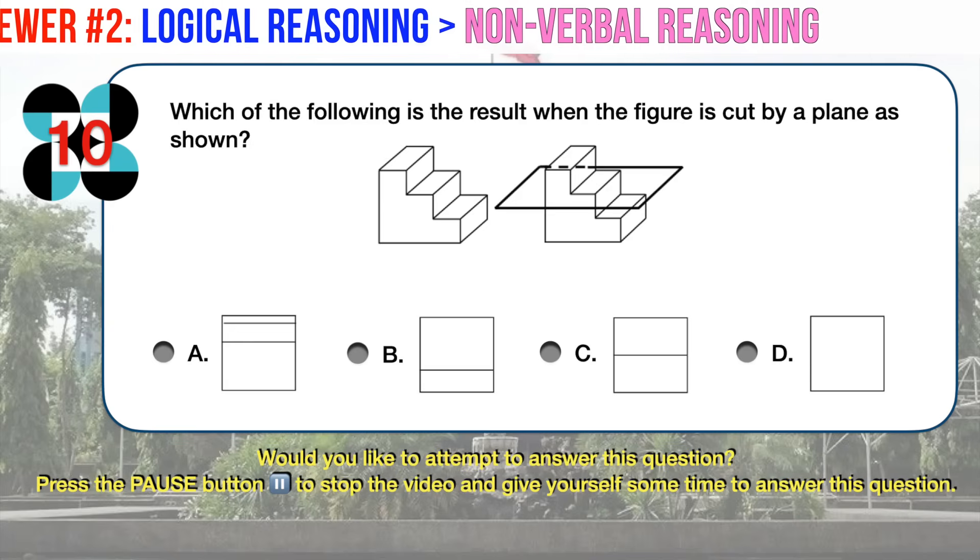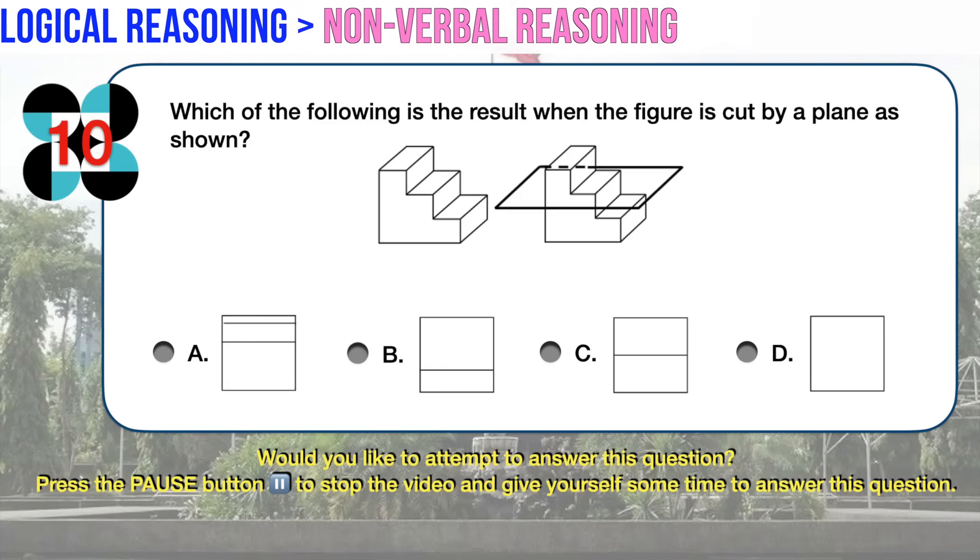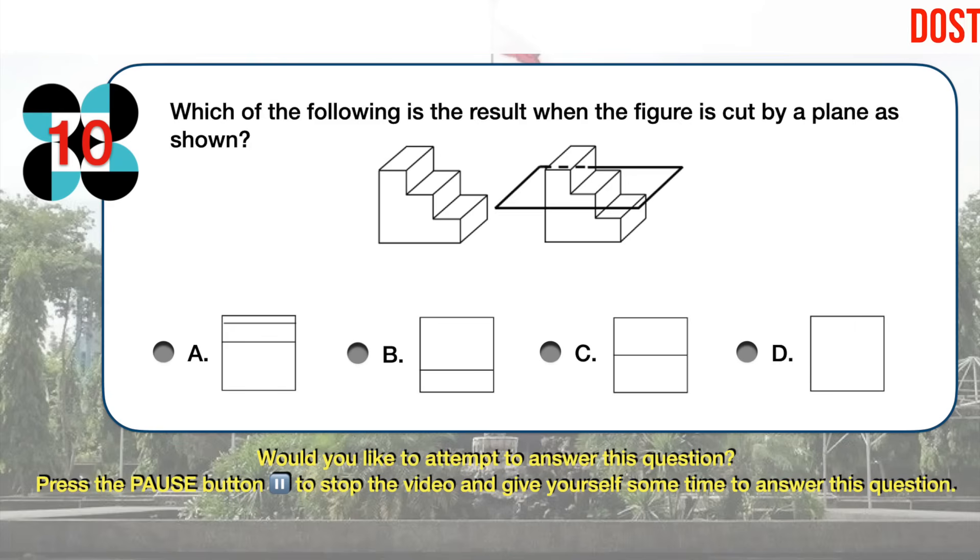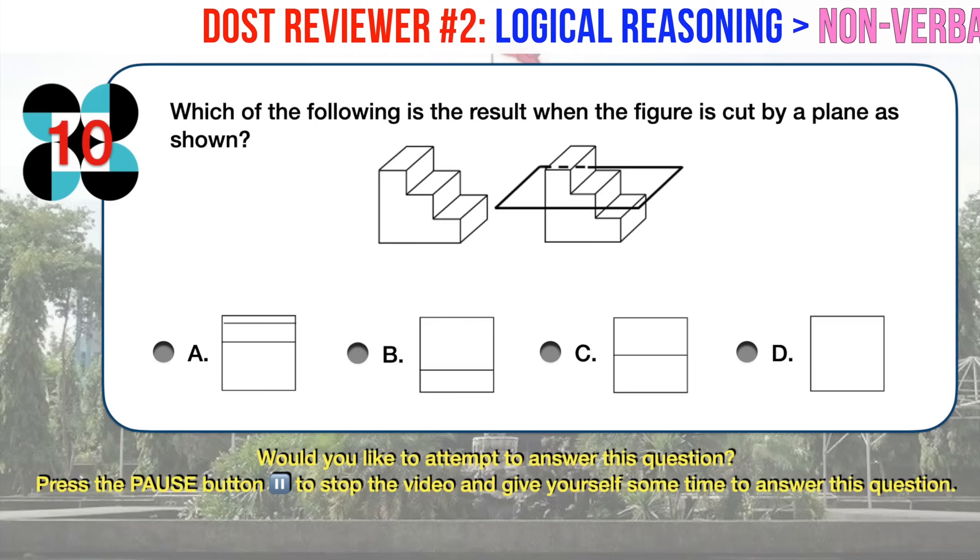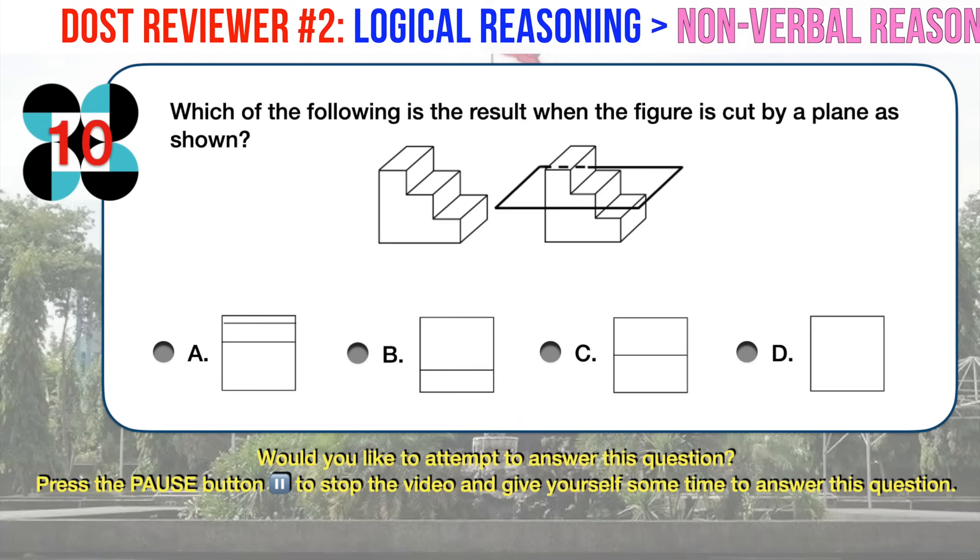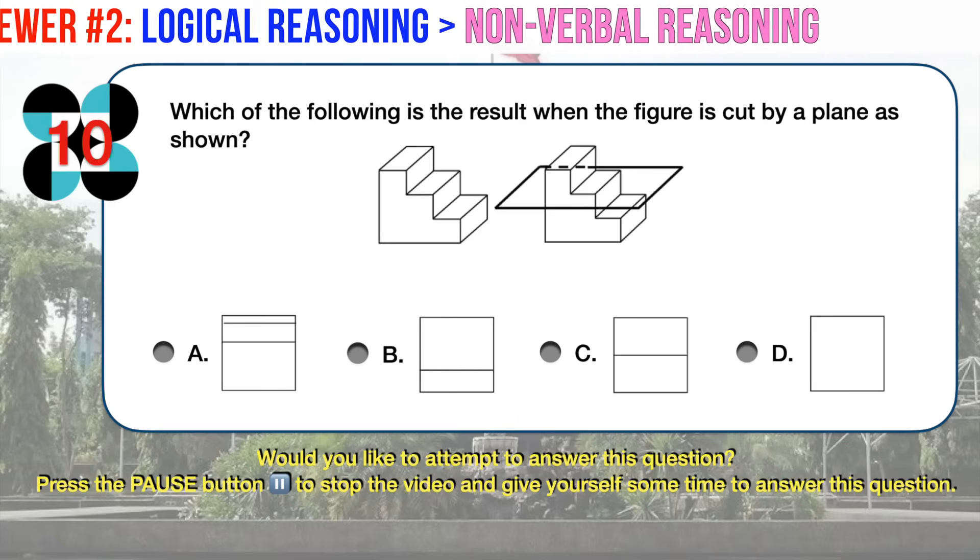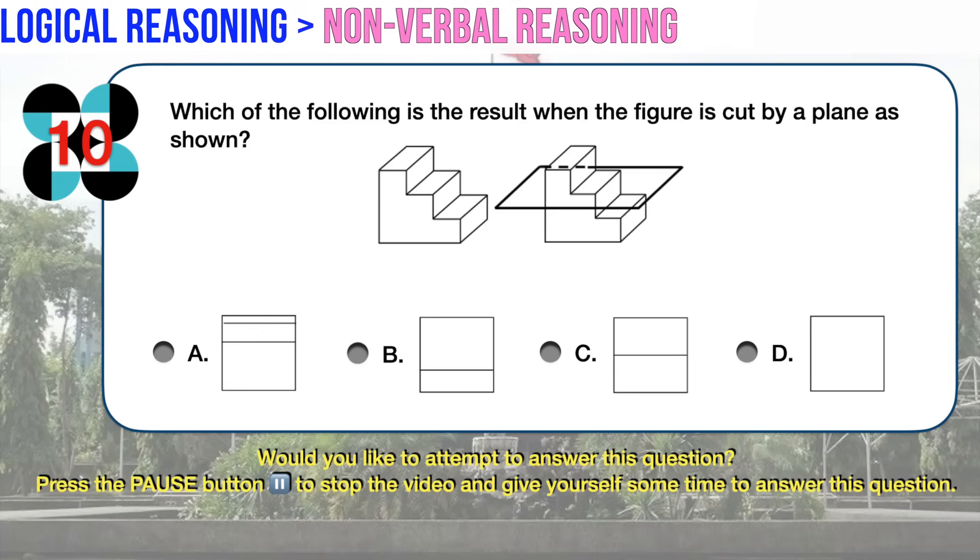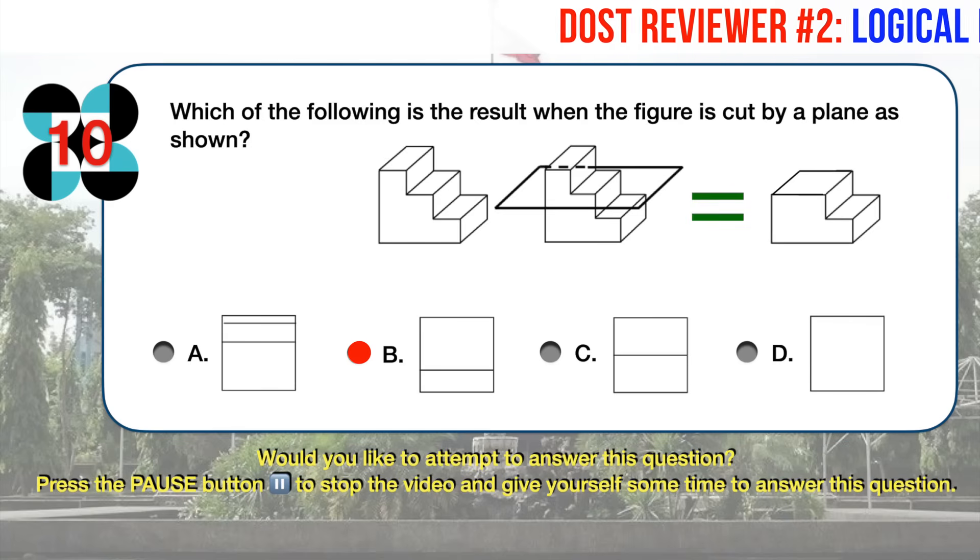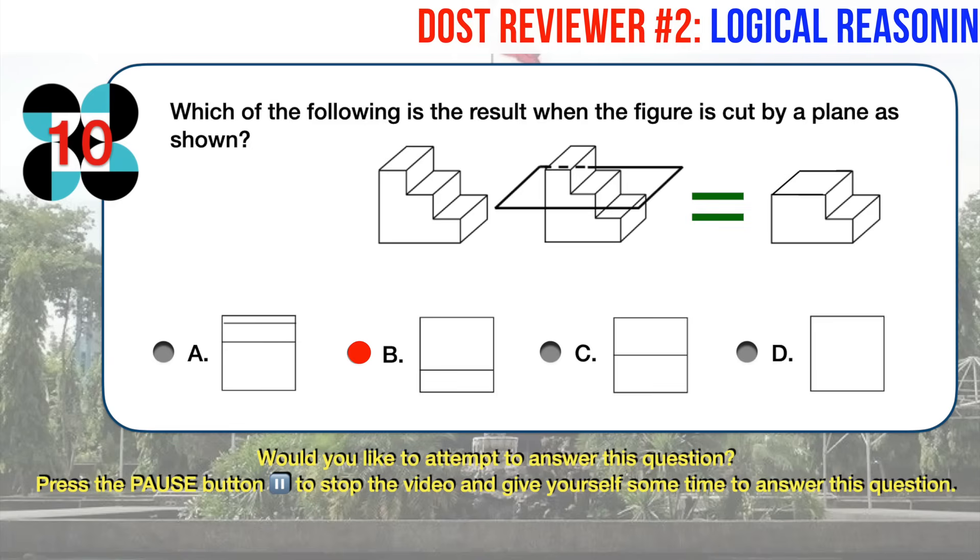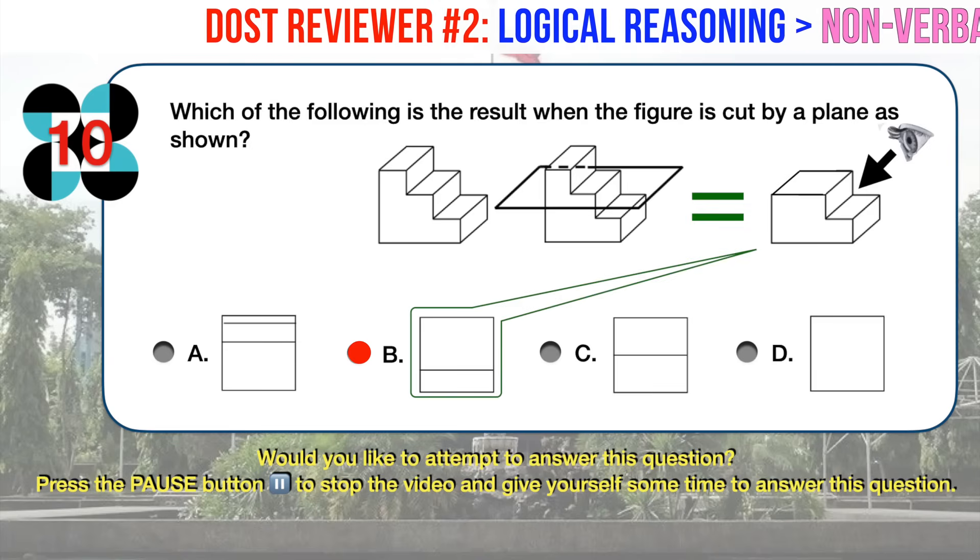Nonverbal reasoning number 10. Which of the following is the result when the figure is cut by a plane as shown? The correct answer is B. Let's visualize the resulting figure after the original given figure was cut by a plane as shown. Viewed from the right side, its top view matches the image in answer choice B.